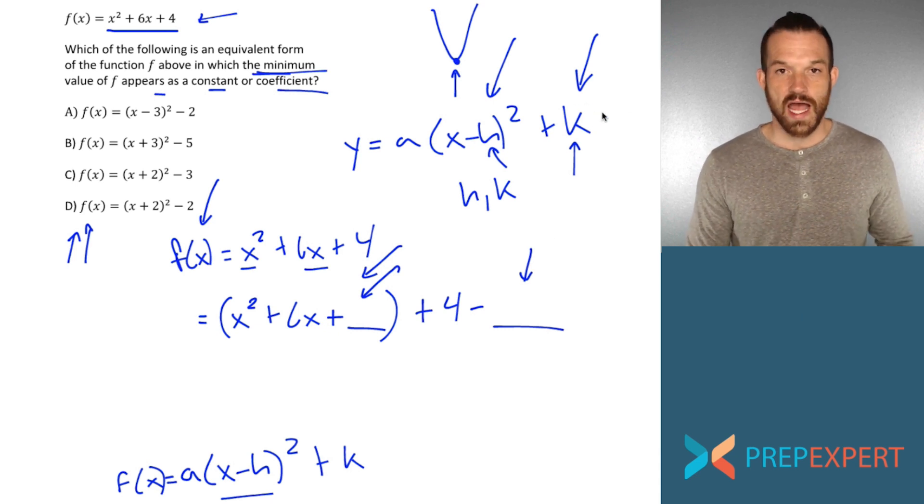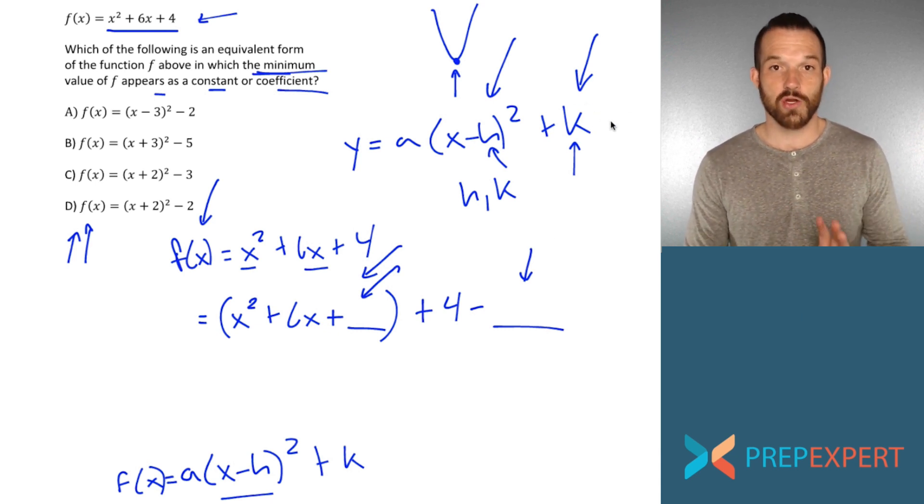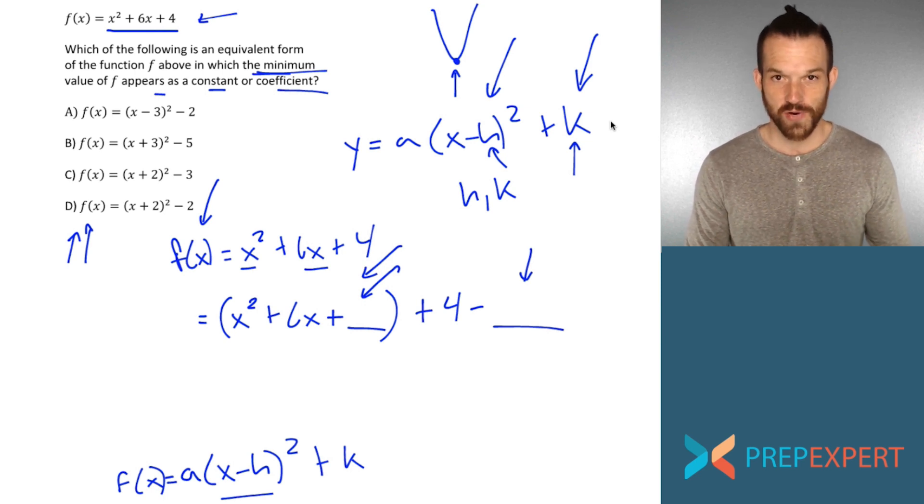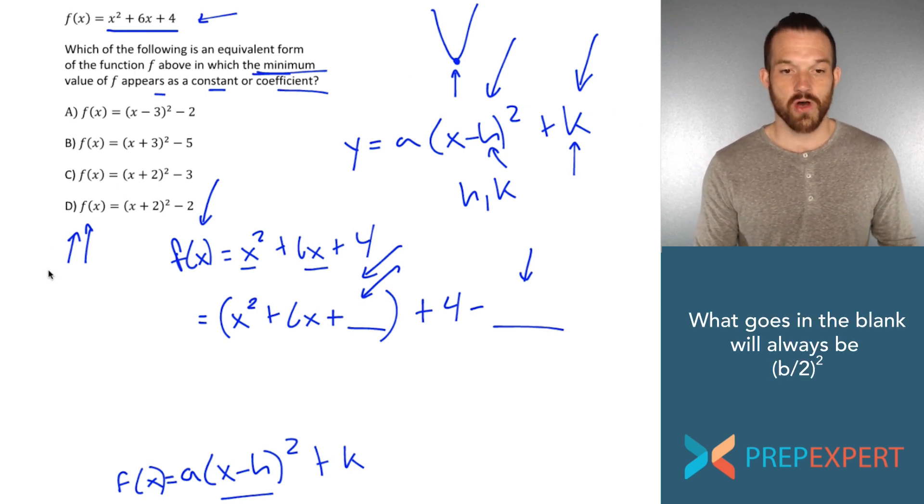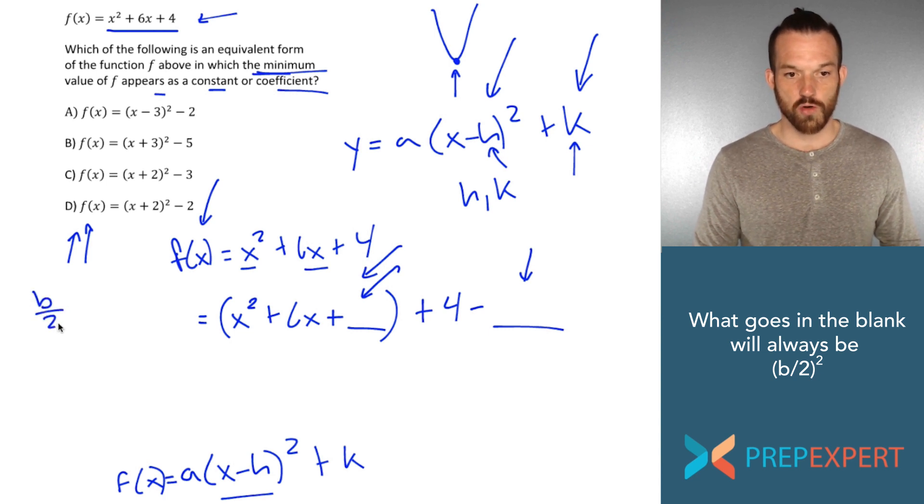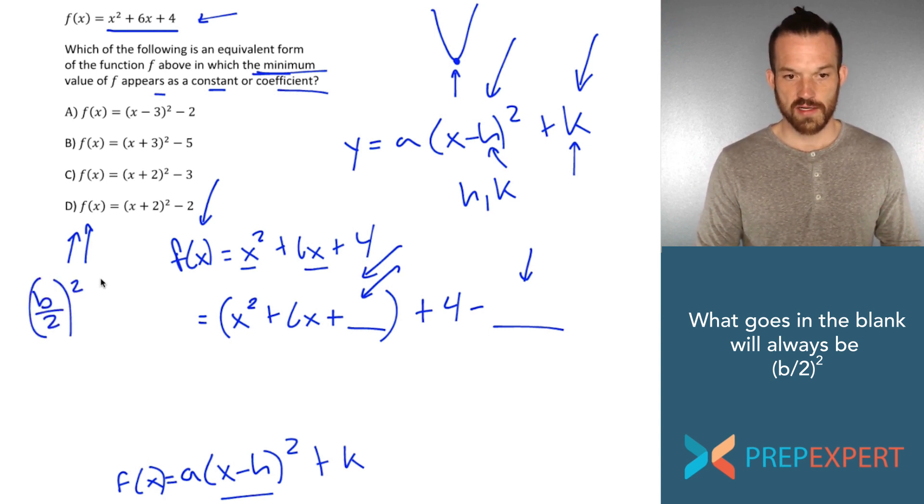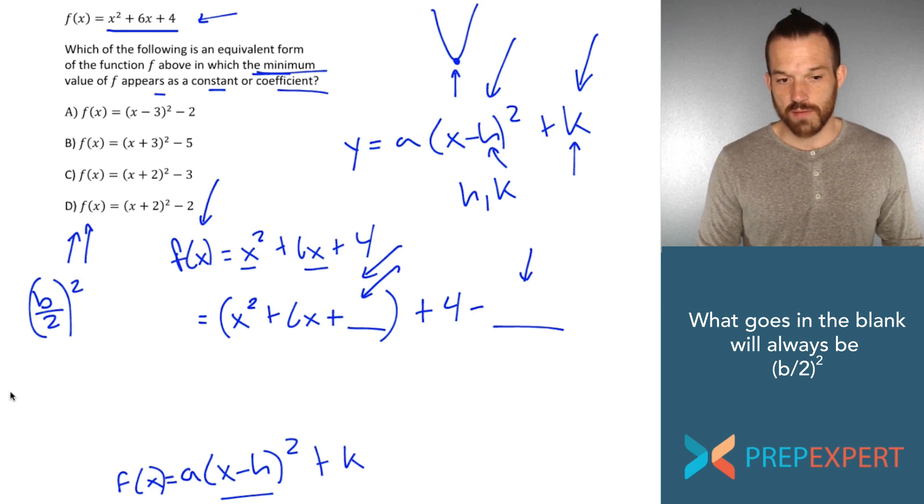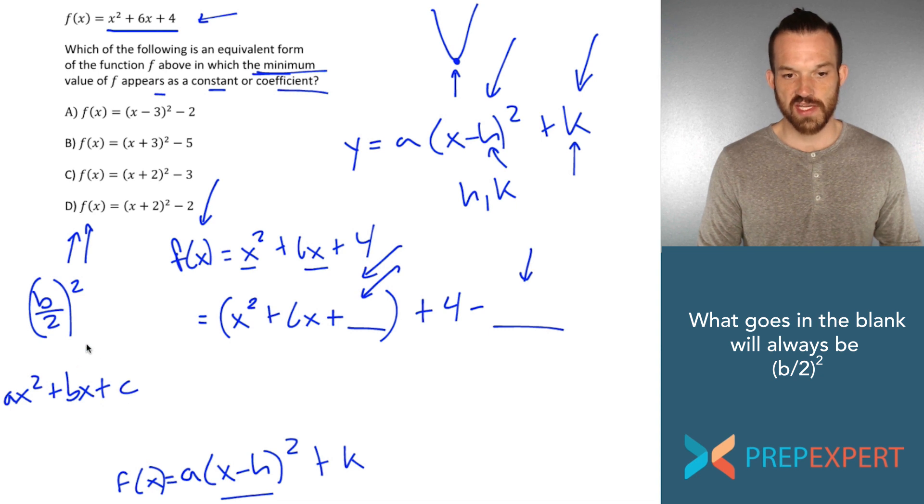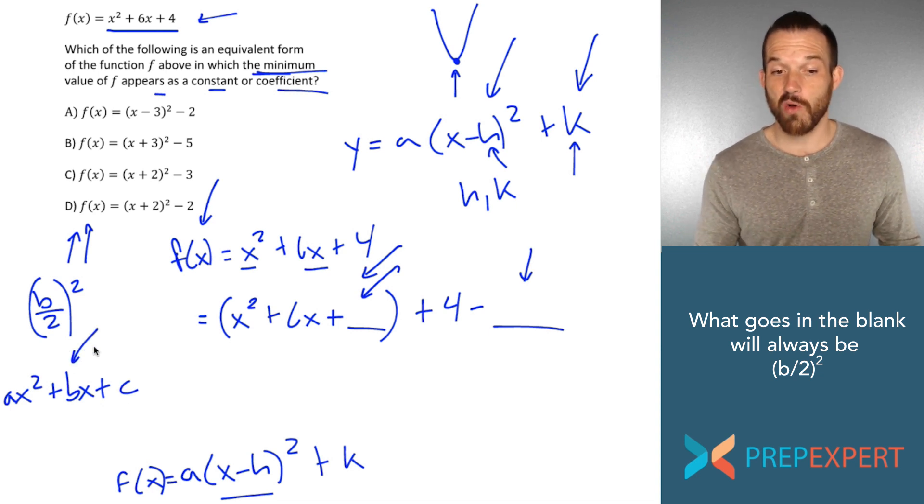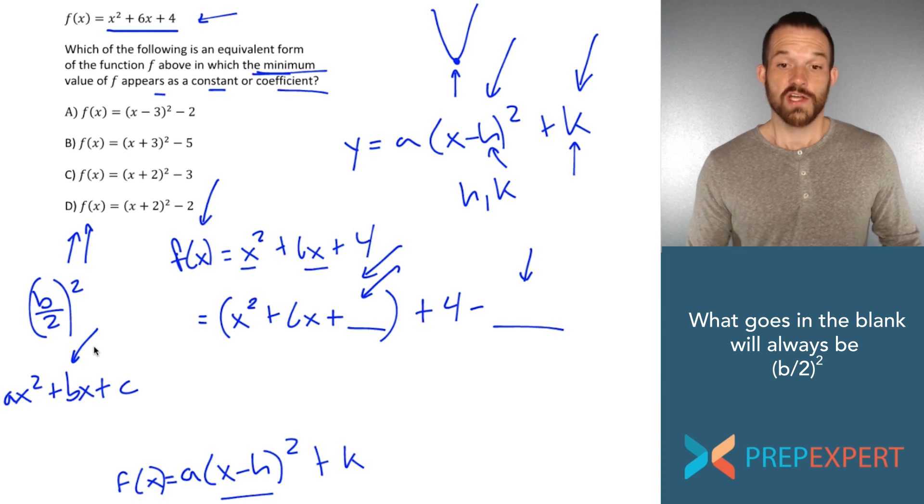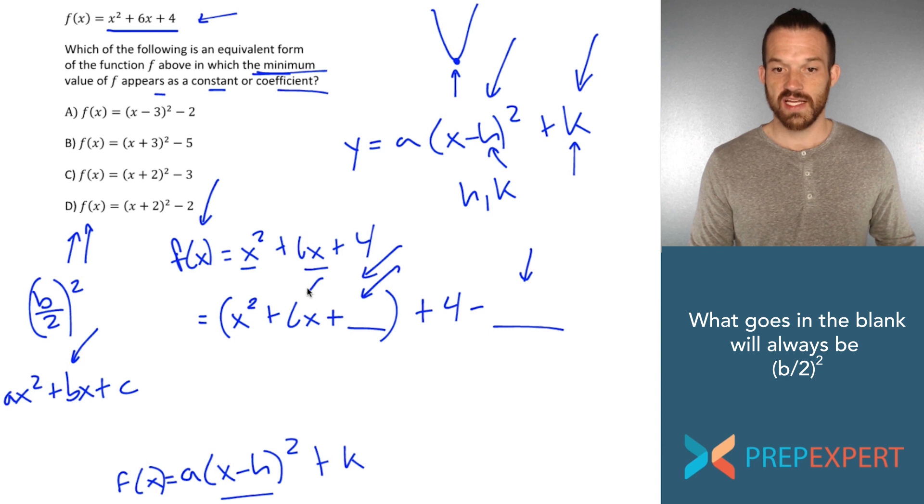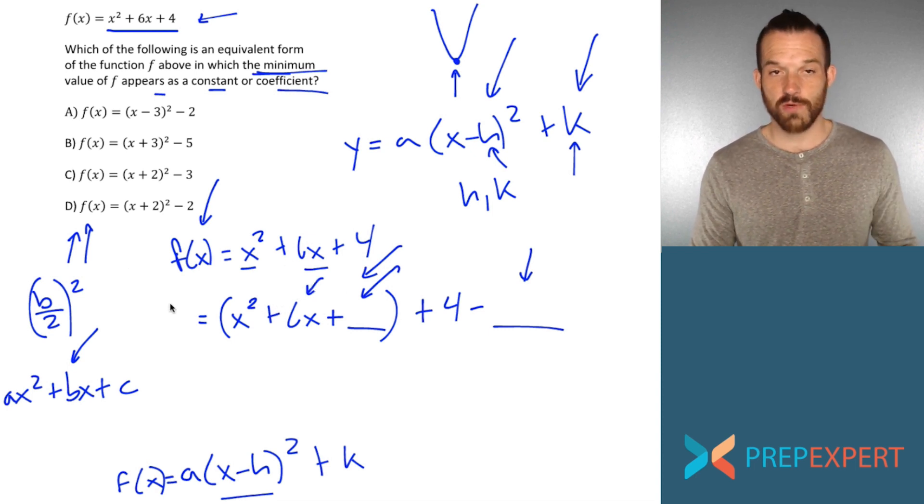So when I'm creating a quadratic that can be factored into a binomial quantity squared, in other words, when I'm completing the square, what goes in the blank is always going to be my b term over two quantity squared. And again, that b term comes from the standard form of a quadratic equation, ax squared plus bx plus c. So when I say the b term, what I mean is the coefficient of the x term. So looking at our x's here, what is the coefficient of the x term? What is our b term? It's six, right? The coefficient of my x term is six.